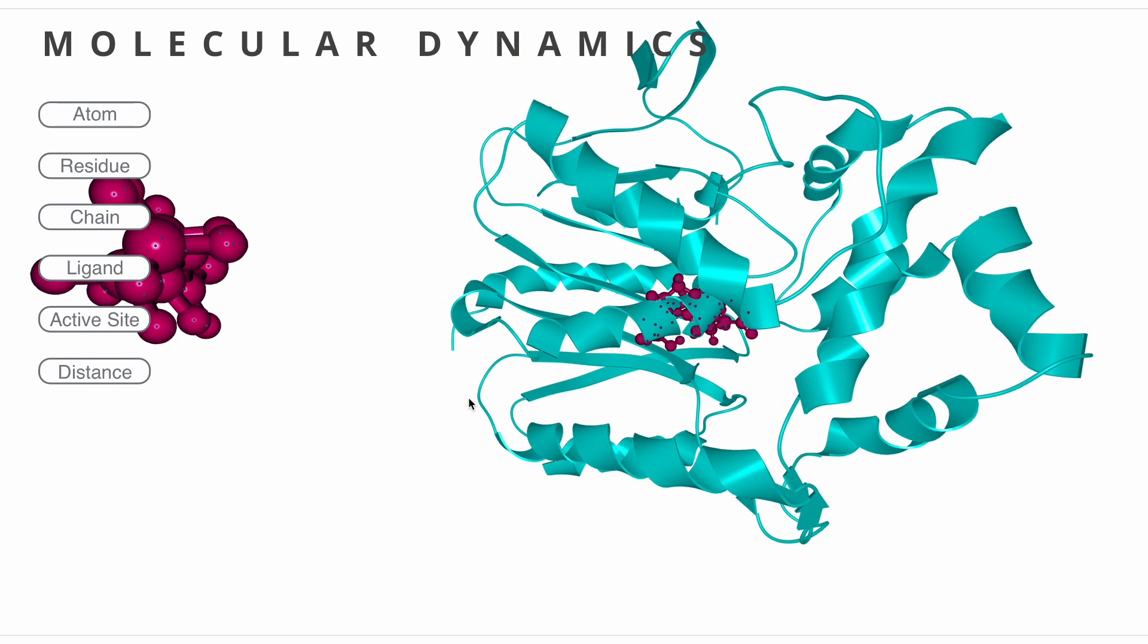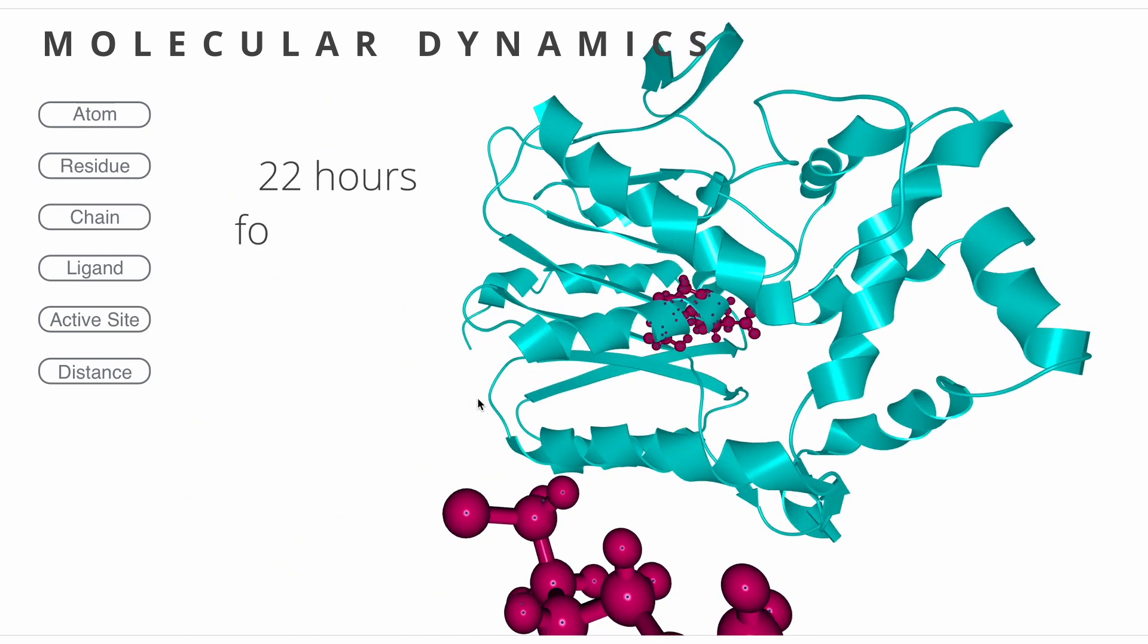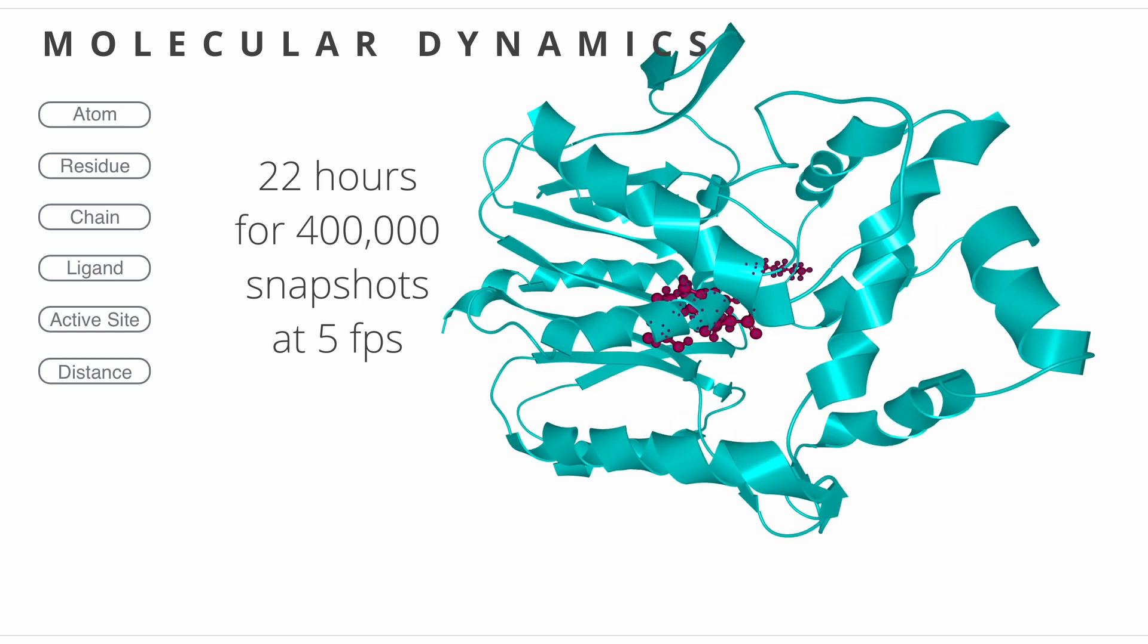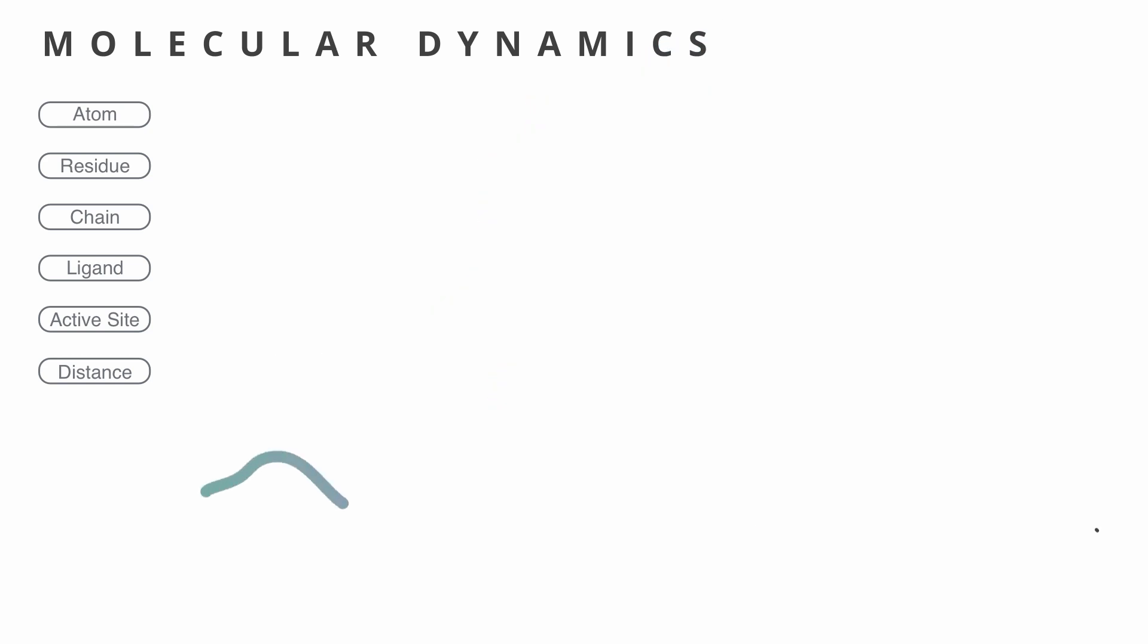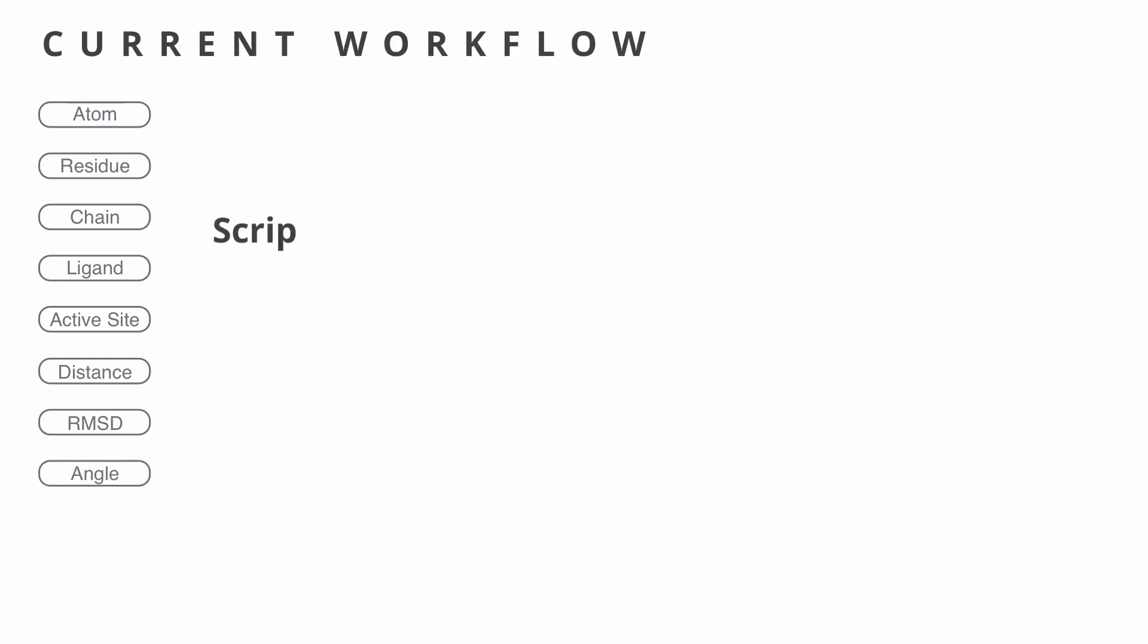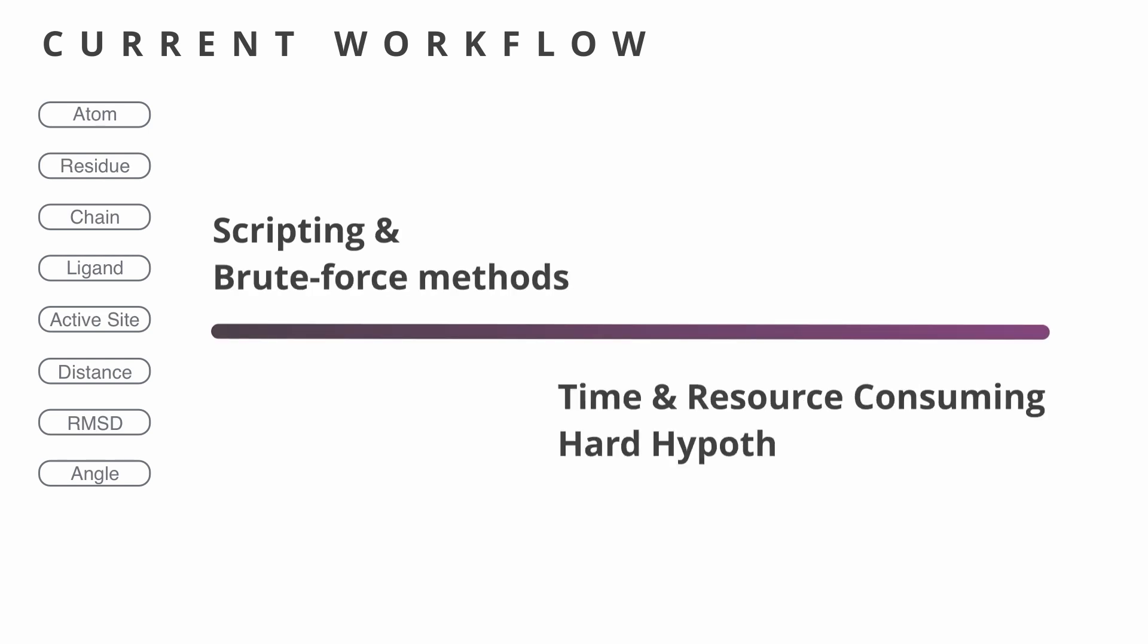If we want to know how the protein changes over time we need to watch the simulation frame by frame which can easily take hours. So instead biochemists study geometrical properties of the molecule such as root mean square deviation or angle. The current workflow is composed of tedious scripting and evaluation of brute force methods. It is very time and resource consuming and hinders hypothesis generation.